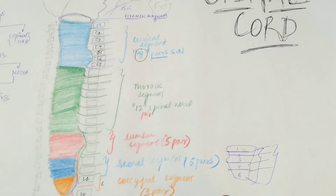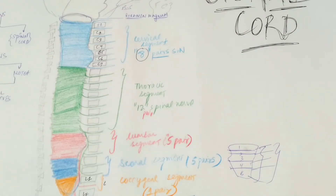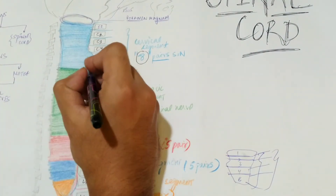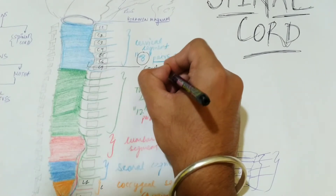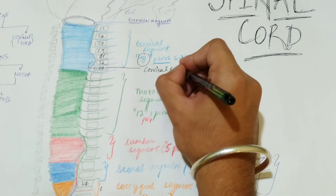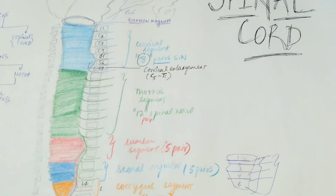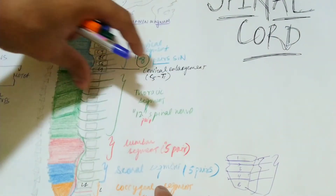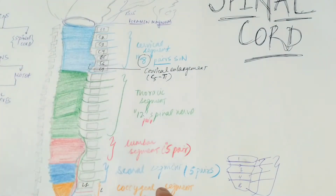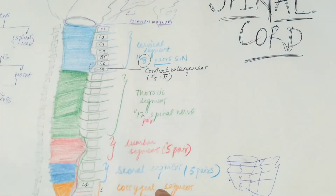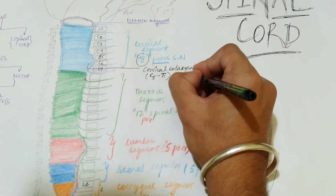Next, let's look at the special enlargements present in the spinal cord. In the cervical region there is a bulge called the cervical enlargement. It is present at the level of C5 to T1 vertebra. The reason for this enlargement is that it supplies the upper limb skeletal muscles, so there are many more gray matter cells in the ventral horn from C5 to T1, with many fibers originating for innervation of upper limb muscles.